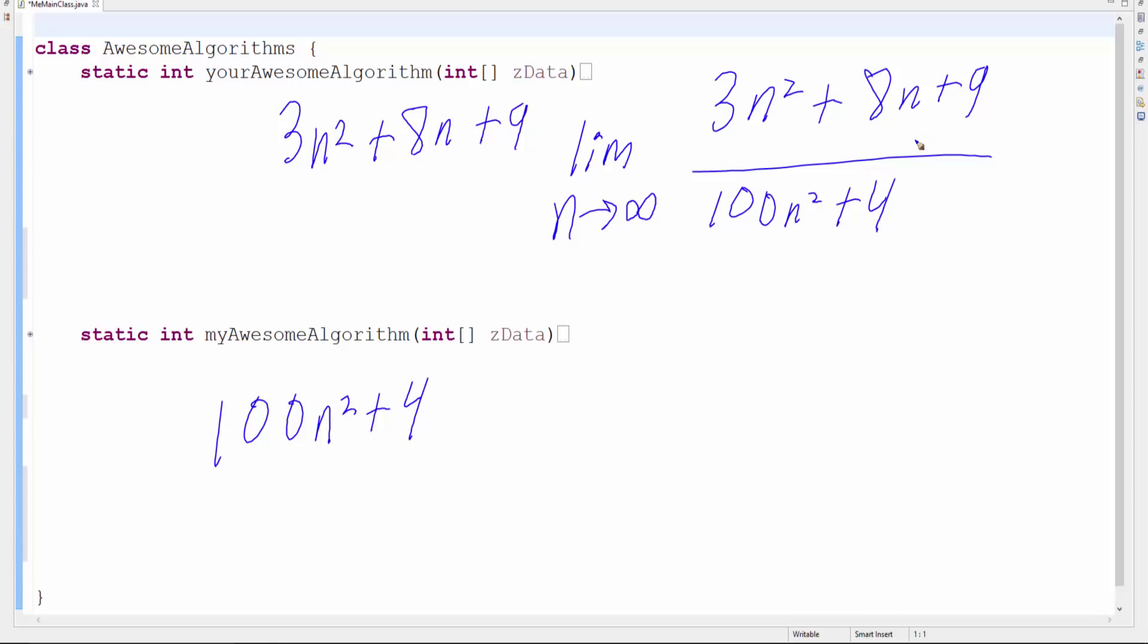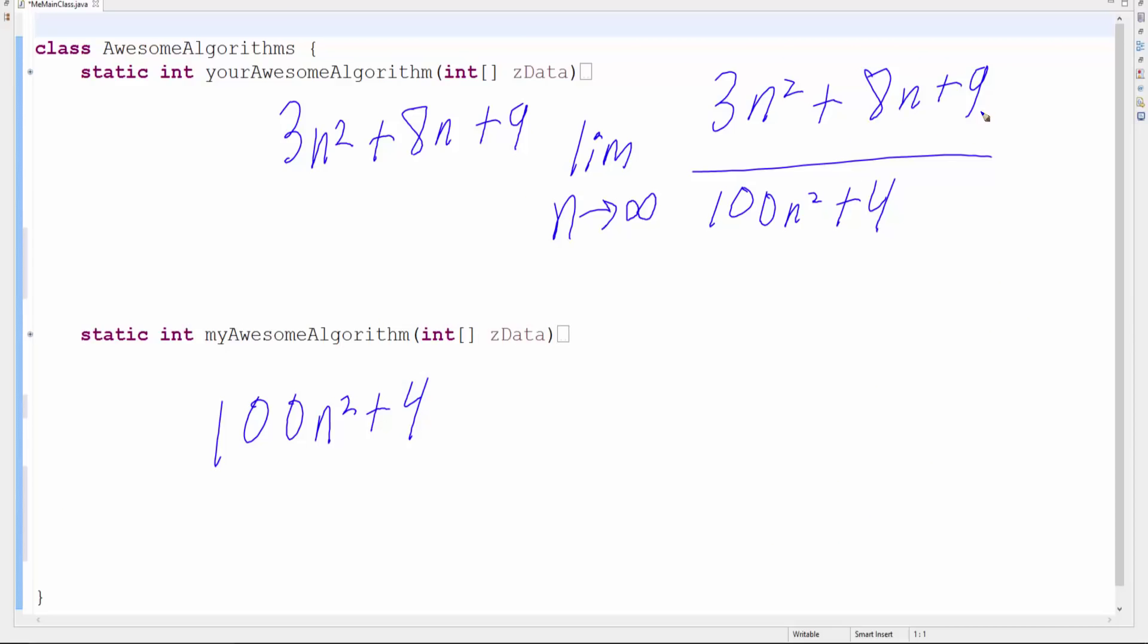And don't let that calculus word scare you. All you need to understand here is n's growing really big to infinity. And who's going to dominate? Well, I just can't really eyeball this and say who's going to win unless I've done a bunch of these in calculus, which I have, so I could tell you flat out. But let me give you something better than me just telling you. I can mathematically split this up. Isn't it legal to say 3n² over (100n² + 4) plus 8n over the same denominator? It's totally legal math. My algebra teacher told me I could do this. And teachers know everything, and so do people on YouTube.